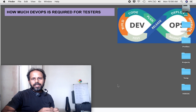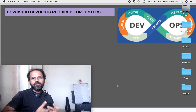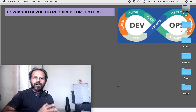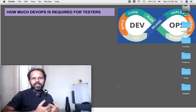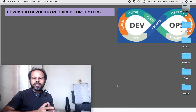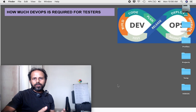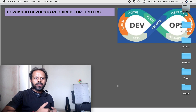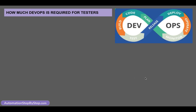To start with, we have to understand that DevOps is a process — it is not some set of tools or skills. So just by learning some tools and skills, we cannot say that we know DevOps or we are a DevOps engineer. It is a process, and this process can be implemented in several ways in different projects and different organizations. So there is not a fixed set of steps or tools that defines DevOps.